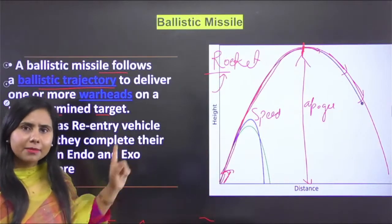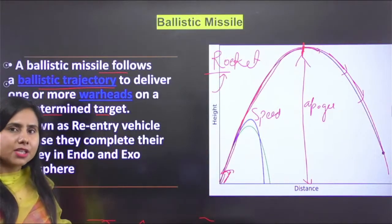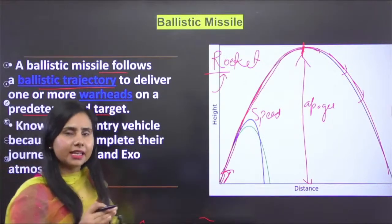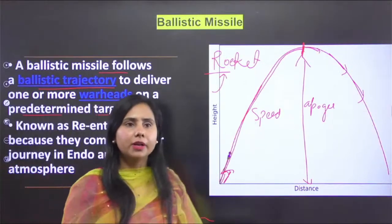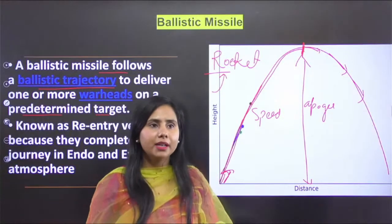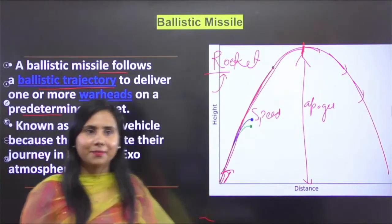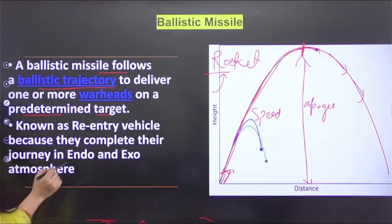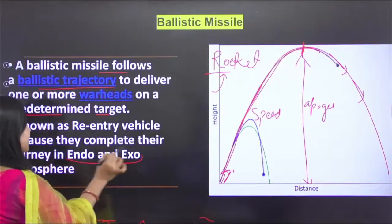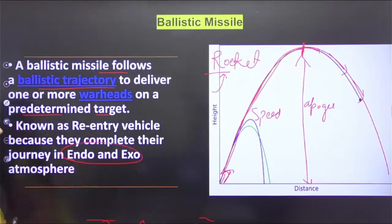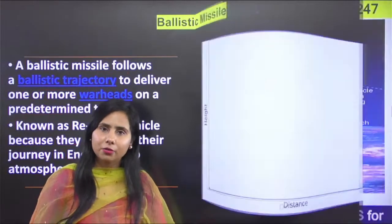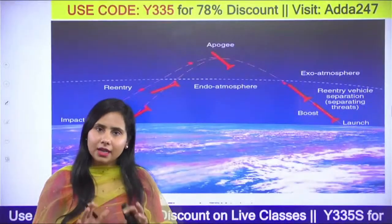So a ballistic missile always follows 2 to 3 types of speed phases — it does not follow constant speed. Also, a ballistic missile is also called a re-entry vehicle. Why is it called a re-entry vehicle? Let's understand calmly.